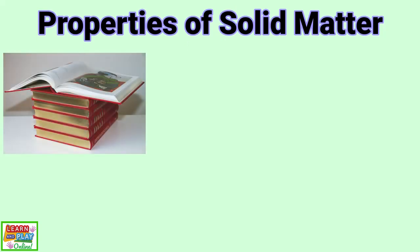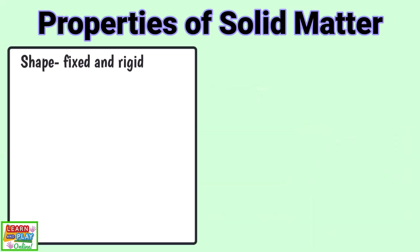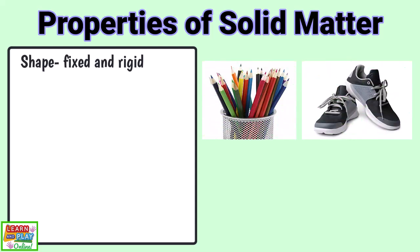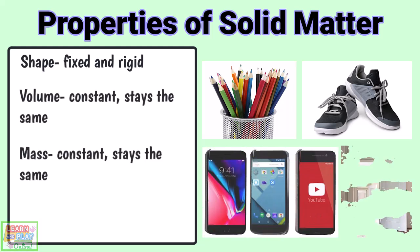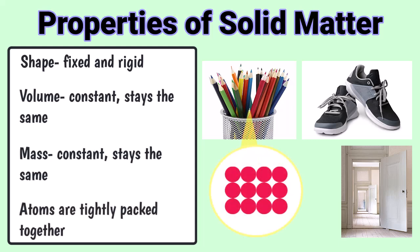Let's start with the properties of solid matter. Solids are easy to recognize as they are everywhere — books, toys and fruit are all examples of solids. Solid matter has a fixed shape and it is rigid, meaning it would be difficult or impossible to bend. Solids have volume and mass that are constant, which means they stay the same. This is because the atoms that make up the solid matter are tightly packed together. So all solid objects will retain the same shape, volume and mass, even if moved from one place to another or put into boxes or containers.